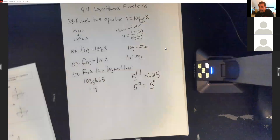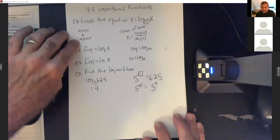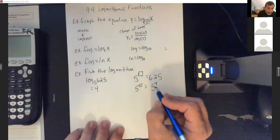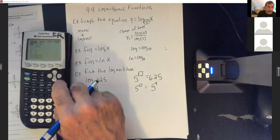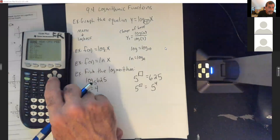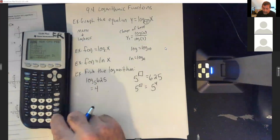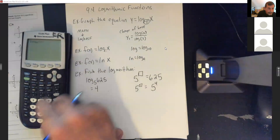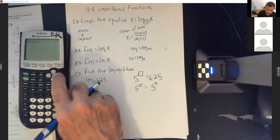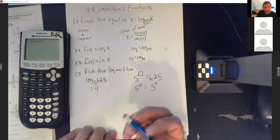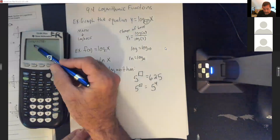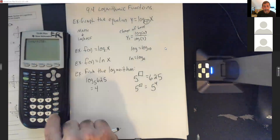If you don't want to figure it out by hand, use your calculator — that's what the log base is for. Go to math, arrow down to log base, hit enter, put your 5 in for the base, arrow over, and put in 625. The calculator finds the exponent that 5 was raised to to get 625, and that's 4.